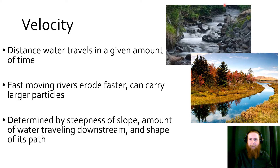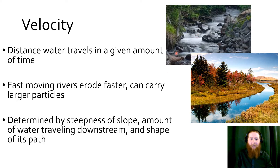Steeper slopes are going to flow faster than gentler ones. The amount of water matters too — a little stream won't have as much flowability. And the shape: a more curving river has a slower velocity, while a straighter river has a faster velocity.